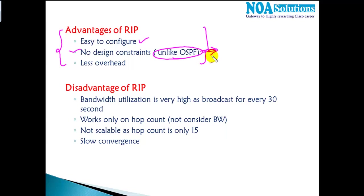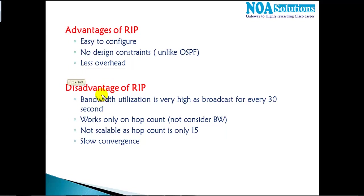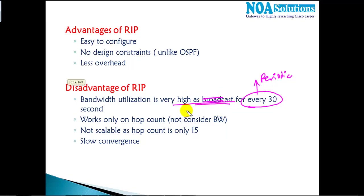OSPF uses more overhead; RIP uses less overhead. However, RIP has more disadvantages. One major disadvantage is high bandwidth utilization — it sends periodic broadcast updates every 30 seconds. Using version 2 reduces this to multicast, but it still sends periodic updates every 30 seconds. Another major disadvantage is that RIP works only with hop count and does not consider bandwidth.